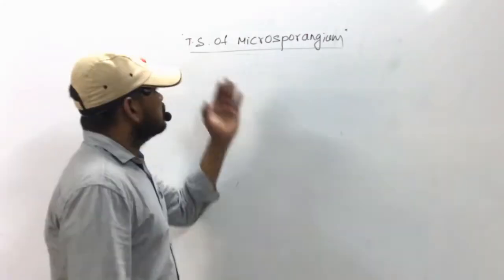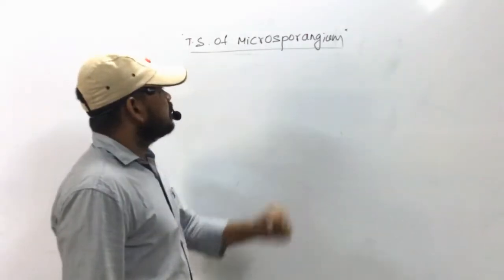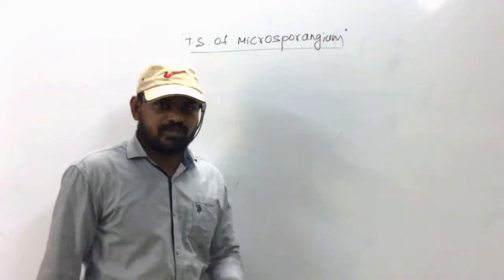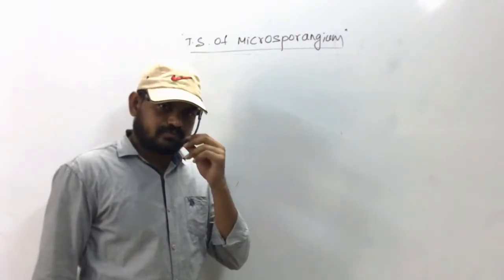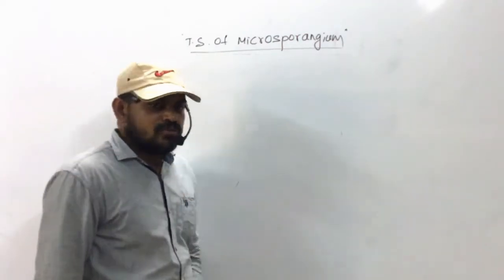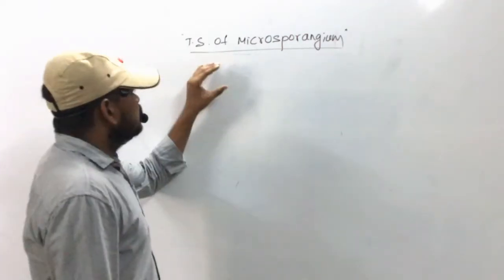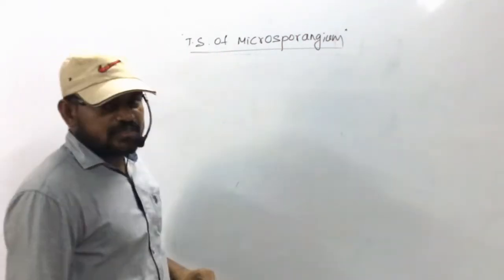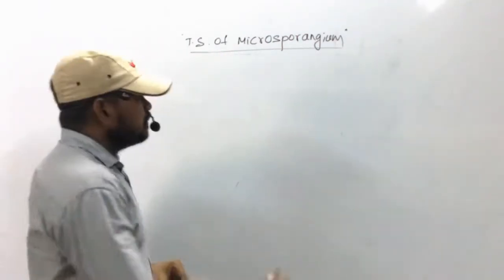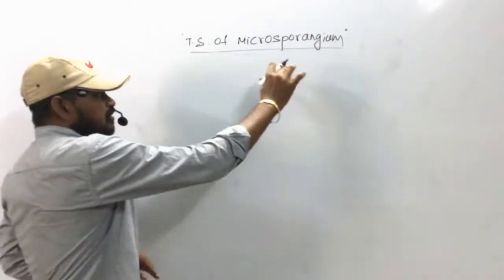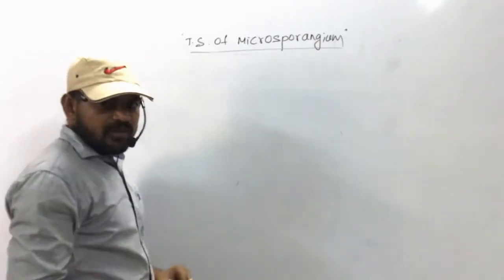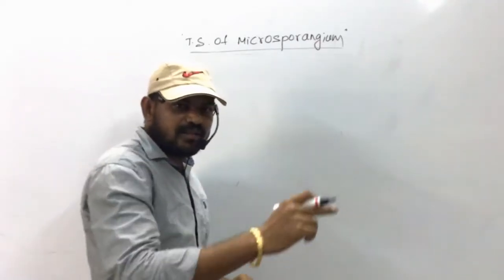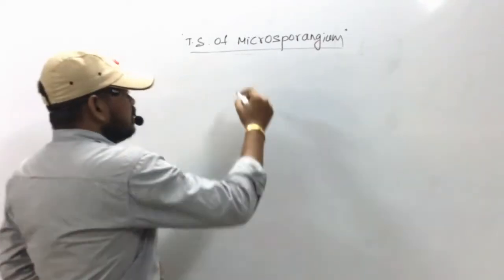This is the transverse section of microsporangium. In transverse section, the microsporangium or anther is circular in outline.